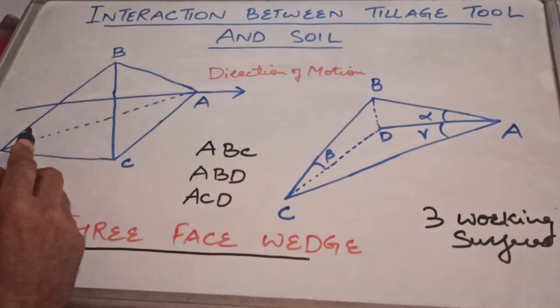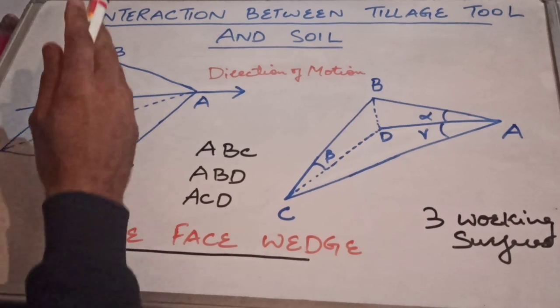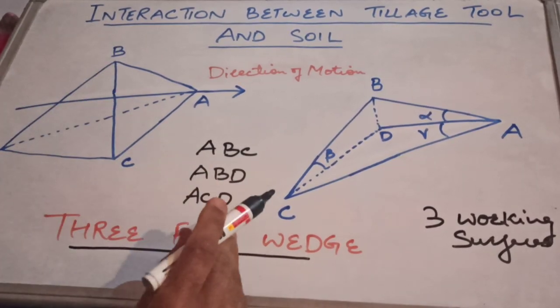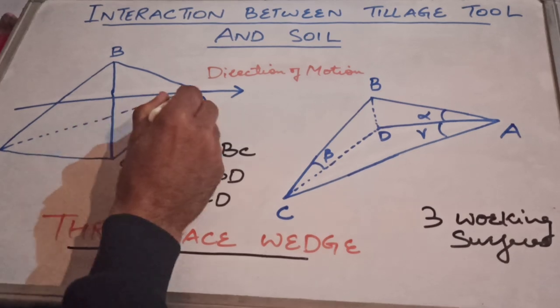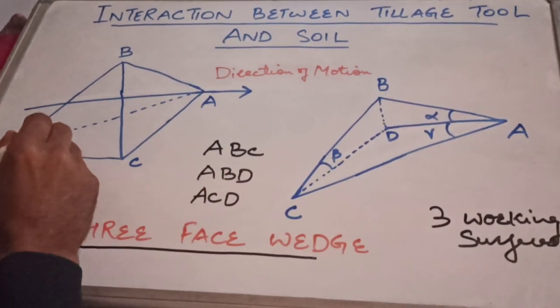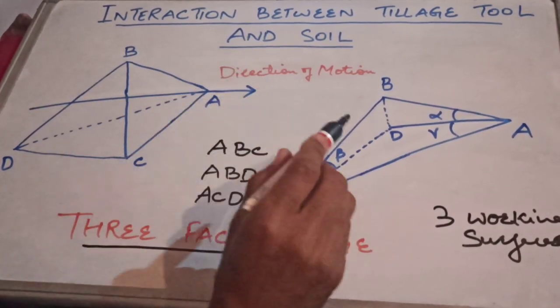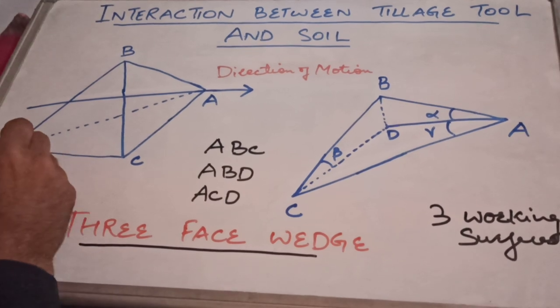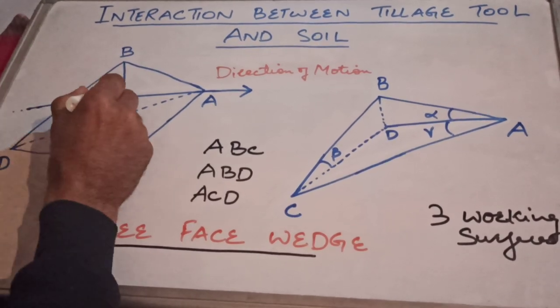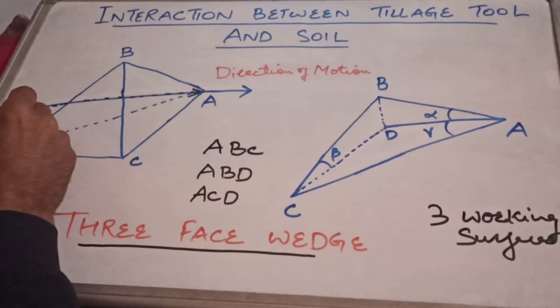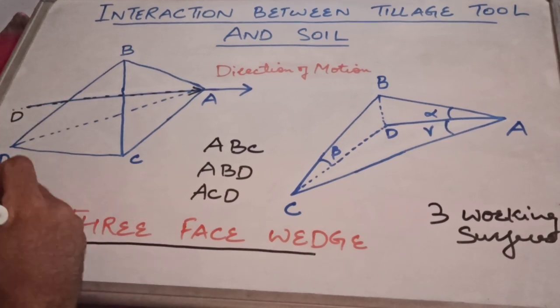You have to remember one thing, that usually when you are lifting the tools up and down, you are trying to make sure that this surface AD should coincide with the direction of travel. Only then your efficiency of the tillage tool will be higher.